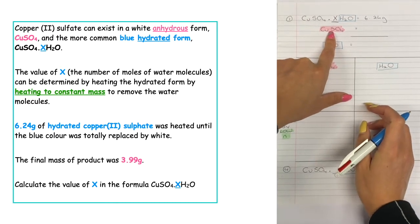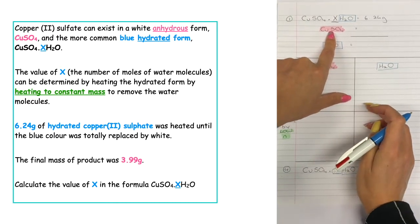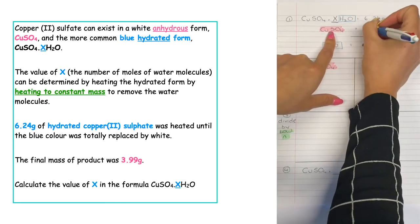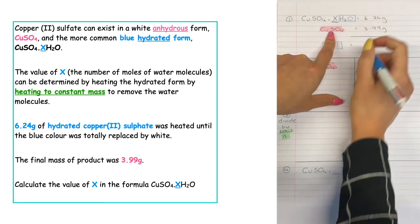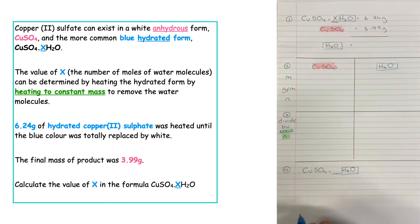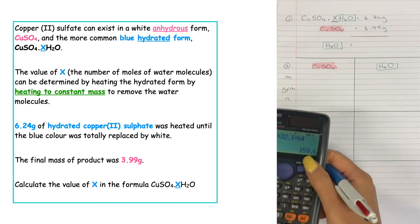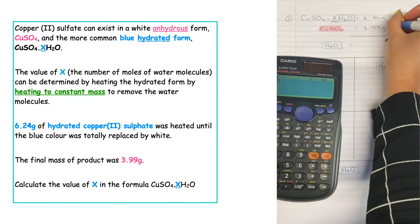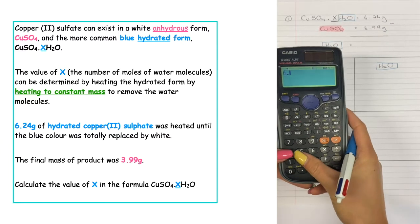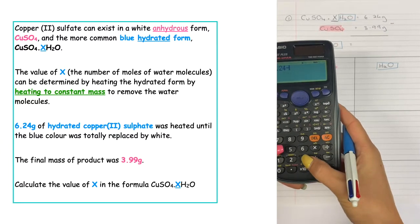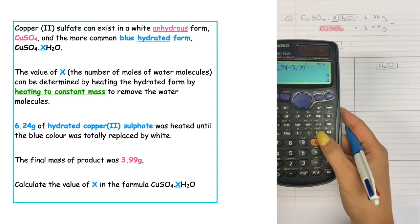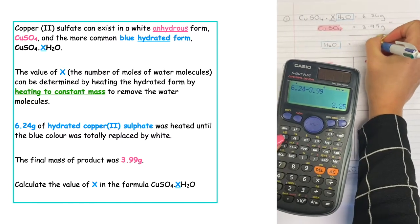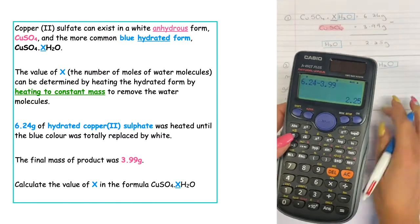After dehydration we were given a final mass of our copper sulphate as 3.99 grams. To calculate the mass of water given off we do a simple subtraction: 6.24 take away 3.99, which gives us a mass of 2.25 grams of water.